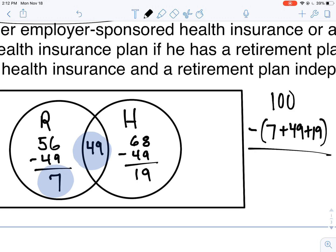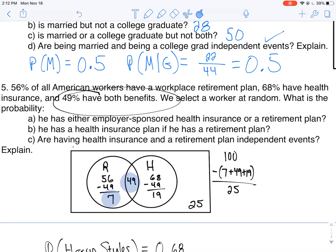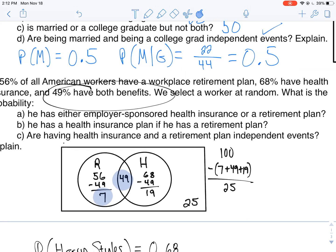I think it's 25. I'm actually gonna plug it in: 100 minus 7 minus 49 minus 19 equals 25. That tells me that 25% of those within this sample don't have health insurance or retirement.